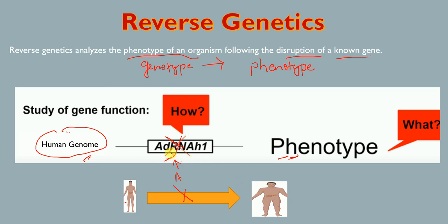This gives us a hint that this particular gene is responsible for metabolism. So to summarize reverse genetics: we delete the gene from the genome and observe the phenotype. It starts from the genotype and goes to the phenotype. Reverse genetics is used to study the function of a gene.